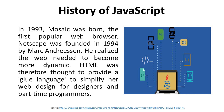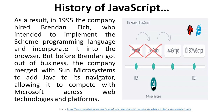Now we discuss the history of JavaScript. In 1993, Mosaic was born as the first popular web browser. Netscape was founded in 1994 by Mark Henderson. He realized the web needed to become more dynamic. HTML was therefore thought to provide a glue language to simplify web design for designers and part-time programmers. As a result, in 1995, the company hired Brendan Eich, who intended to implement the Scheme programming language and incorporate it into the browser. But before that, the company merged with Sun Microsystems to add Java to its Navigator, allowing it to compete with Microsoft across web technologies and platforms.